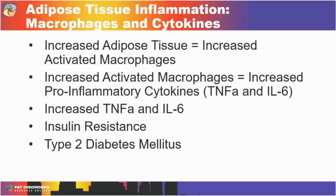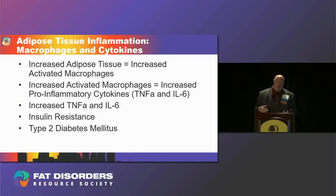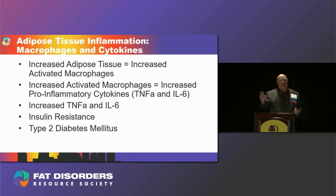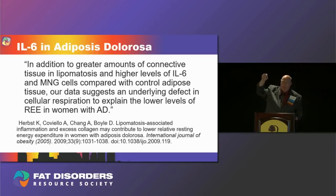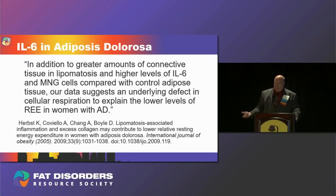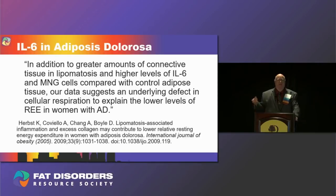As TNF and IL-6 increase, that contributes to the development of metabolic syndrome, with insulin resistance being a component. With the onset of insulin resistance comes the risk of developing type 2 diabetes. Type 2 diabetes is a coronary artery disease risk equivalent, so this is the connection between obesity, the metabolic syndrome, and cardiovascular disease. IL-6 has been found at increased levels in patients who have Dercum's disease.